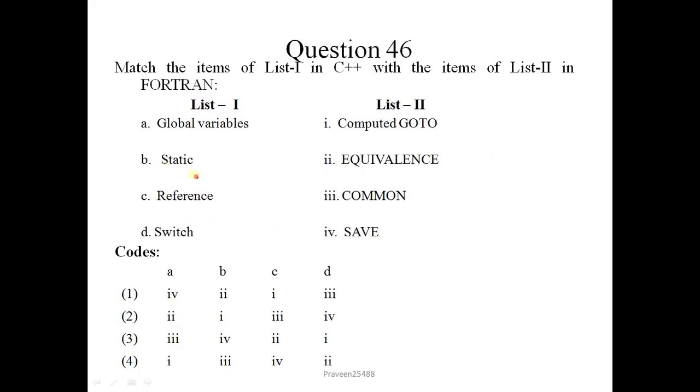Next question is: Match the items of list 1 in C++ with the items of list 2 in Fortran. Global variables will be common in Fortran. Static will be save. Reference will be equivalence. And for switch, it is computed go to. Correct sequence is 3, 4, 1, 2. 3, 4, 2, 1. So correct option is 3.